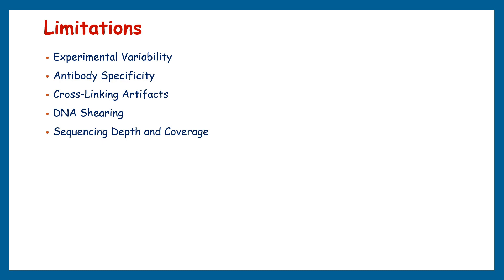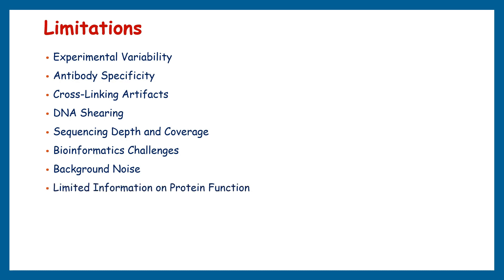The quality and depth of ChIP sequencing results are highly dependent on sequencing coverage. Low sequencing depth can result in missed binding events, while excessive coverage might not significantly improve results and can waste resources. ChIP sequencing data analysis requires sophisticated bioinformatics tools and expertise; poor data processing or incorrect analysis methods can lead to misleading interpretations. ChIP sequencing data often contains background noise due to non-specific binding and technical artifacts, making it challenging to distinguish true binding sites from noise, especially in regions with low signal-to-noise ratios.